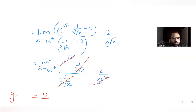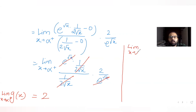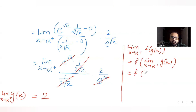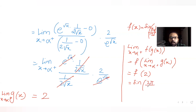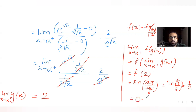So the limit of g(x) as x tends to α equals 2. Now for the original problem, limit as x tends to α of f(g(x)) equals f(2), since f is continuous. We know f(x) = sin(πx/12), so f(2) = sin(2π/12) = sin(π/6).